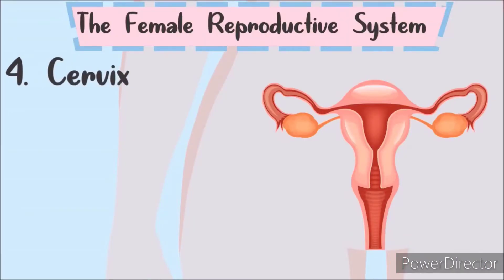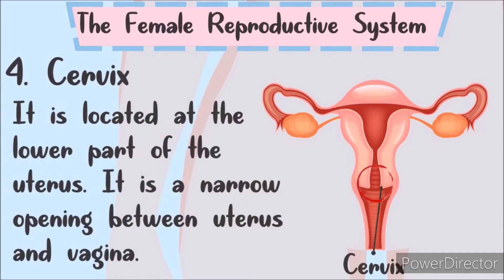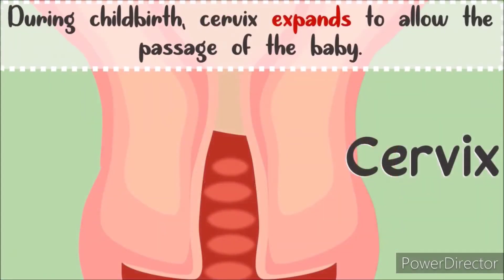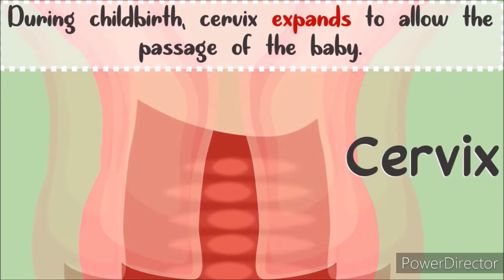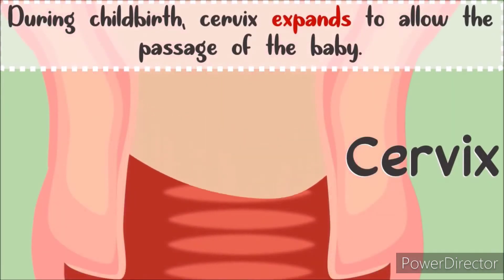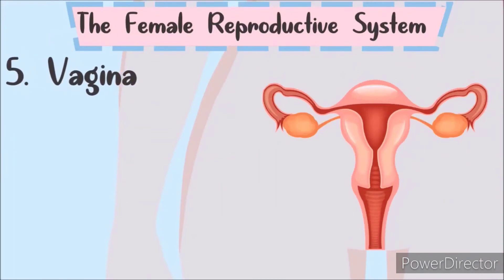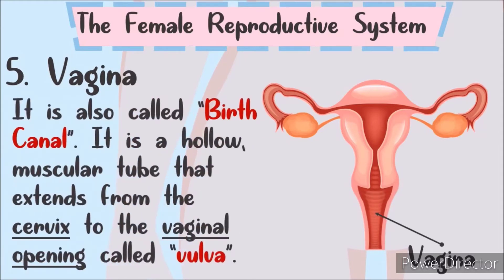Next is the cervix. It is located at the lower part of the uterus. It is a narrow opening between the uterus and the vagina. During childbirth, it expands to allow the passage of the baby. And then, the vagina — also called the birth canal. The vagina is a hollow muscular tube that extends from the cervix to the vaginal opening called the vulva. It expands to let the baby pass during normal delivery.